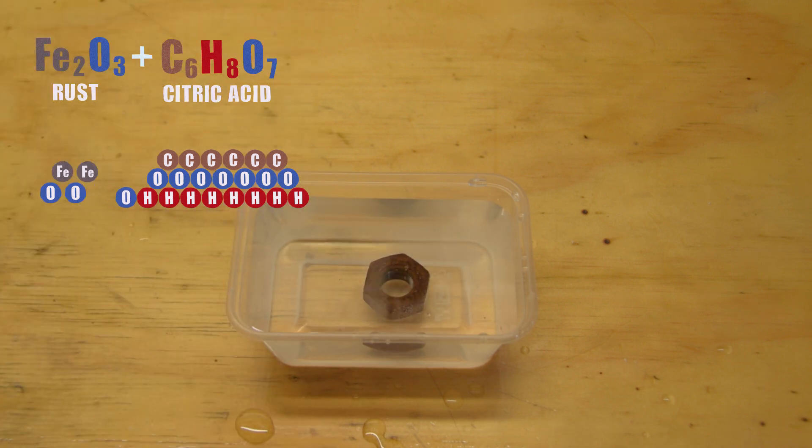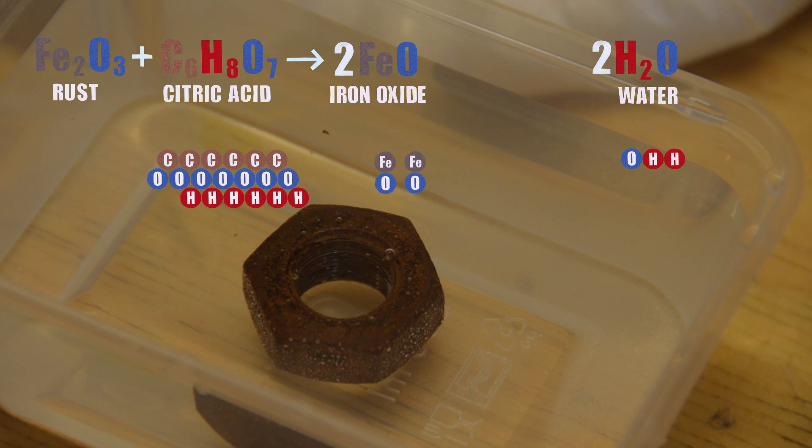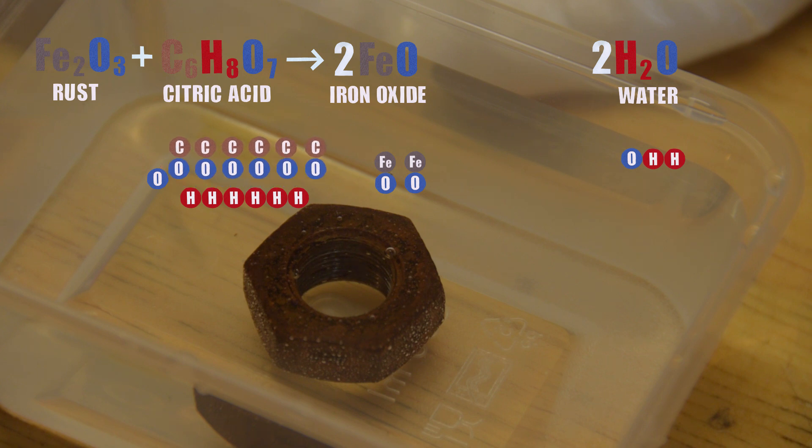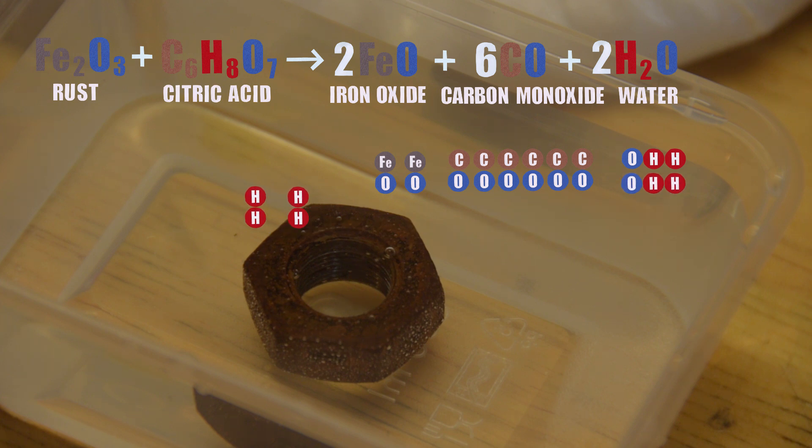Oxygen comes out of the rust and teams up with a couple of hydrogens to form water. That leaves us with two parts iron oxide. This is a black inert iron oxide that will typically break away from the part when the rust breaks down. The carbon and oxygen becomes carbon monoxide. The remaining oxygen becomes water. And the hydrogen becomes hydrogen.